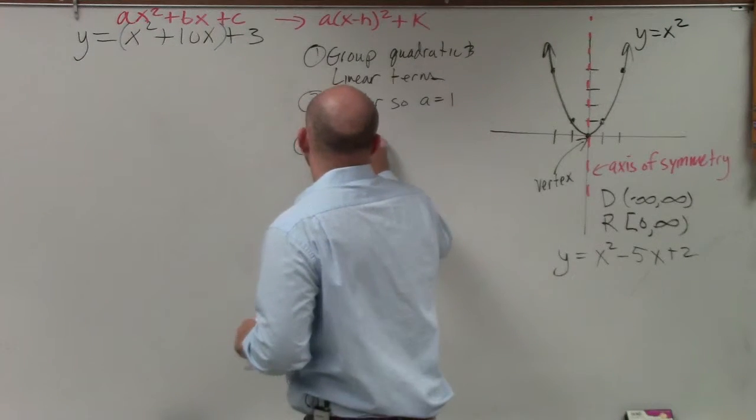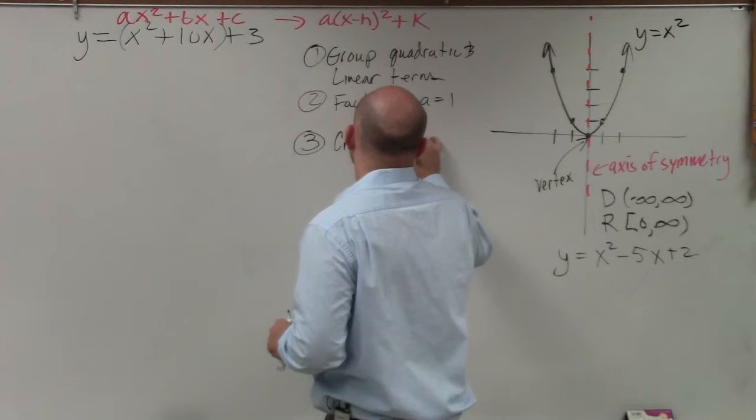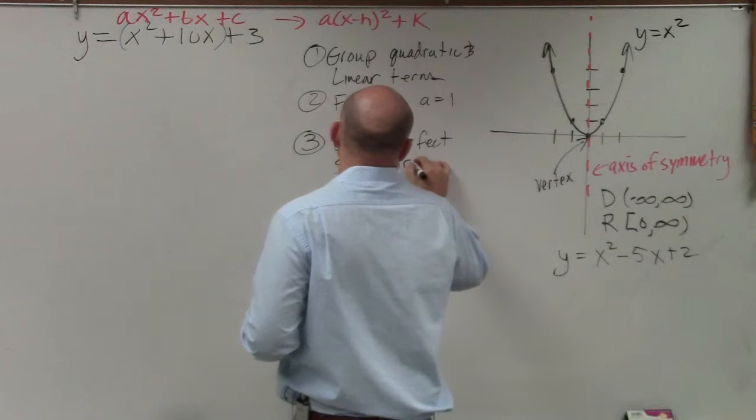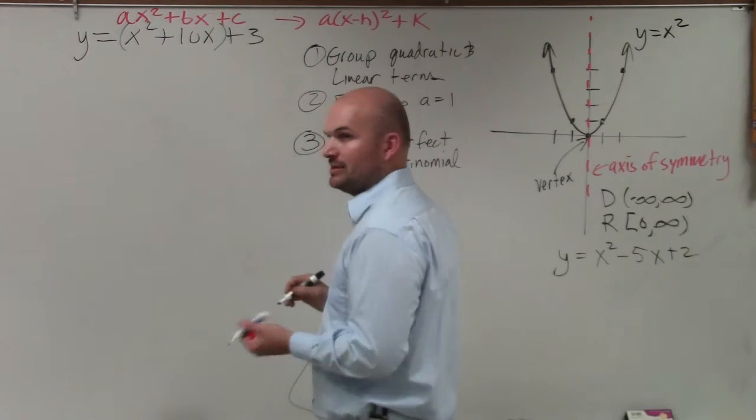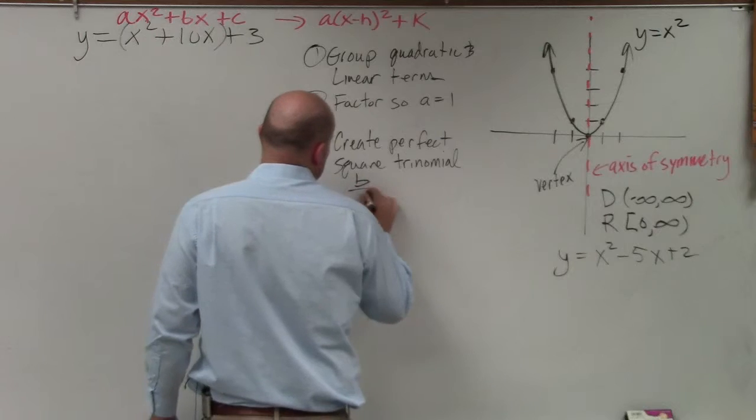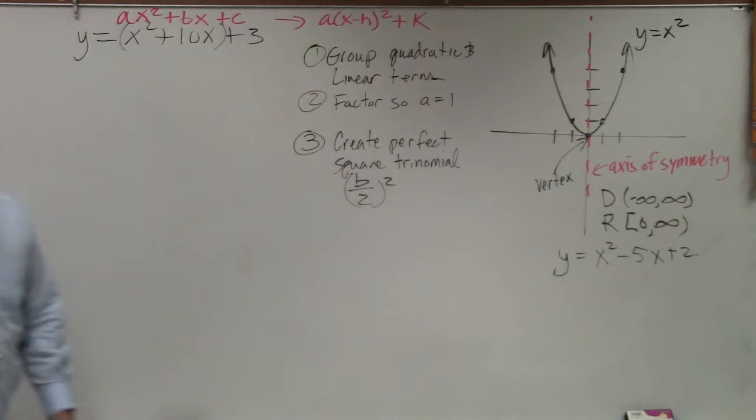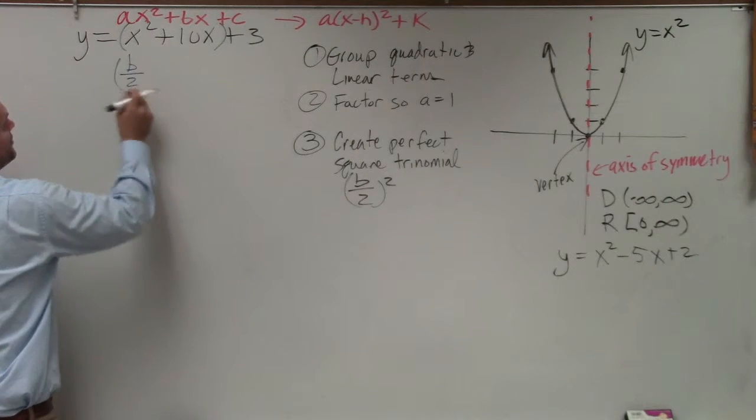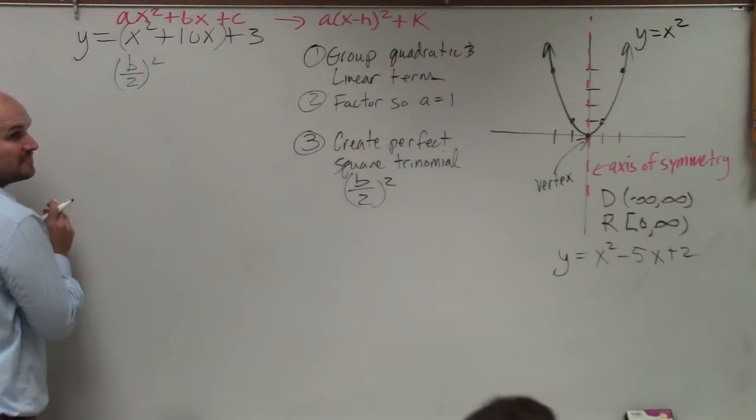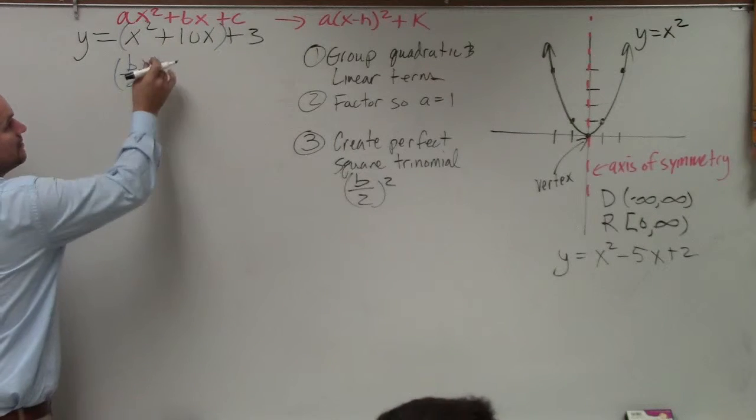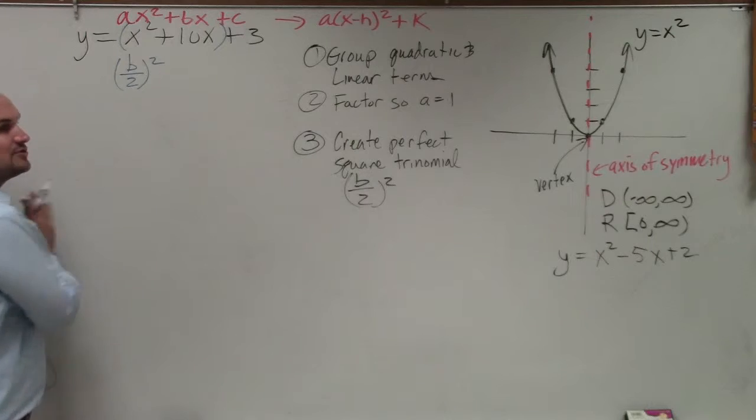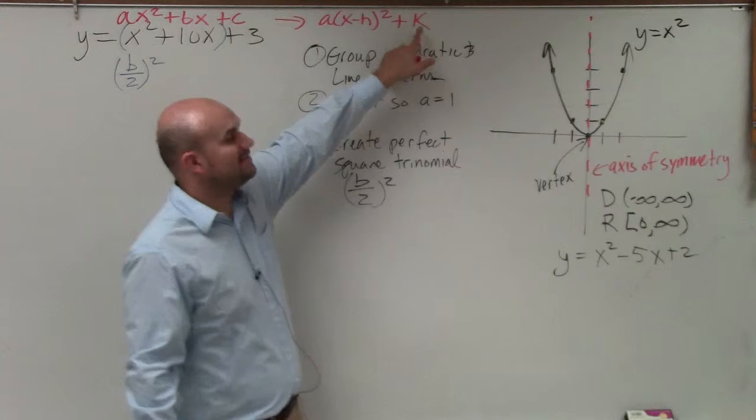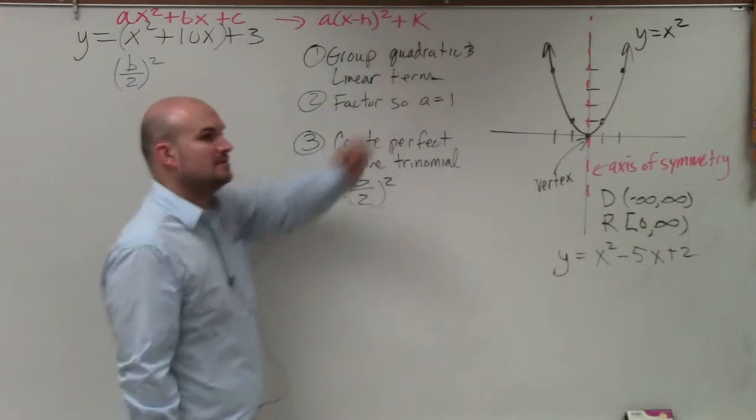Step number three, create the perfect square trinomial. 25. Correct. Now, how did he do that? Where did that come from? That comes from b divided by 2 squared. So what you're simply going to do is do b divided by 2 and then square it. Because we're not trying to solve it in this case. We're just trying to rewrite it into this form. So I want that 3 to be a part of my k, so I'm going to leave it there.